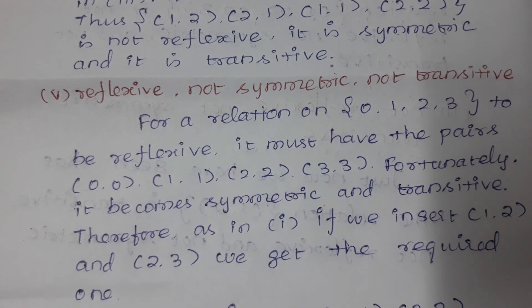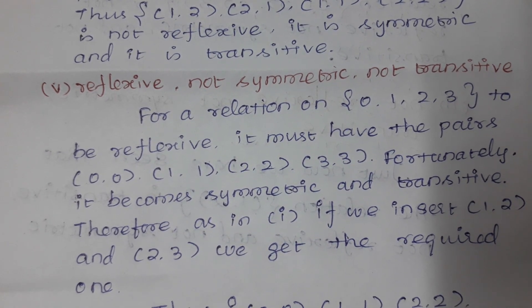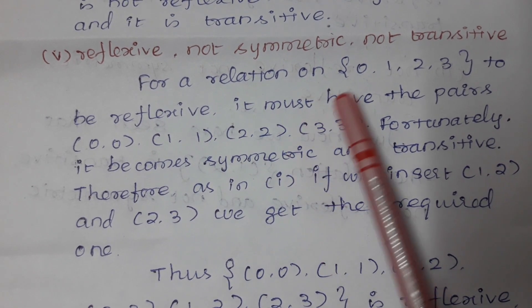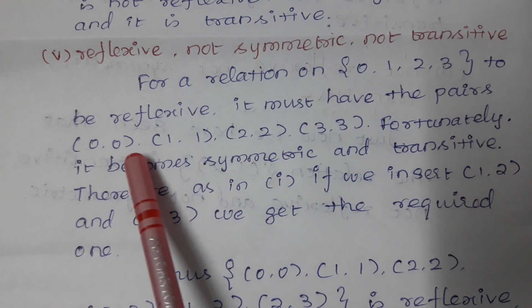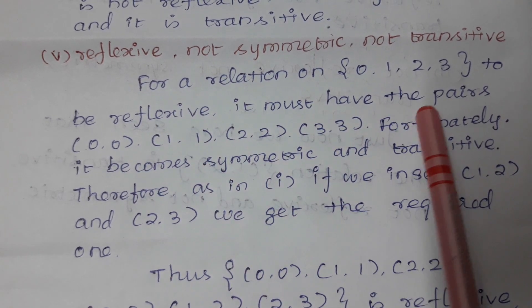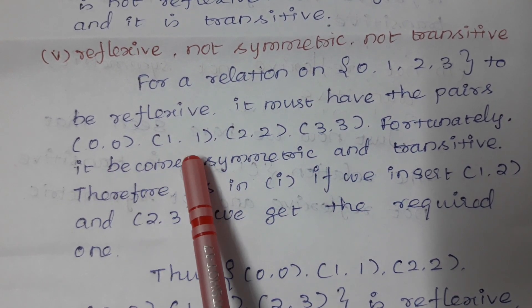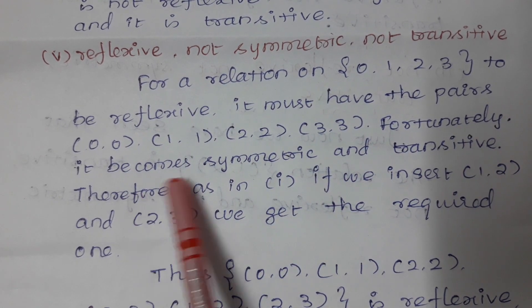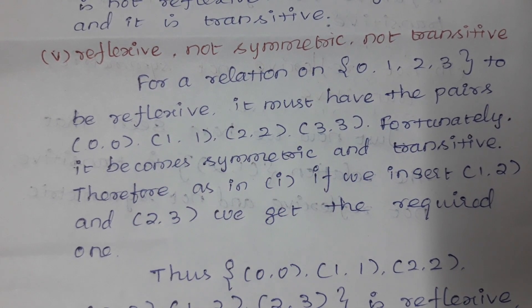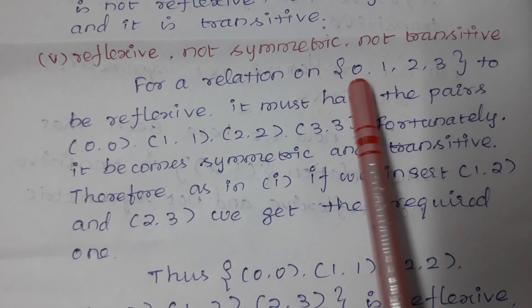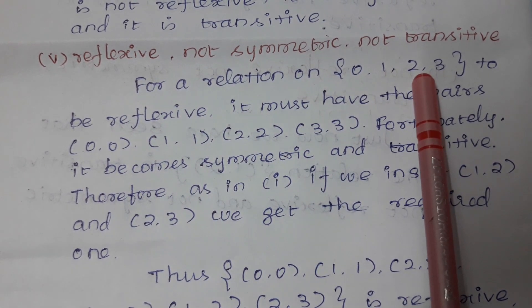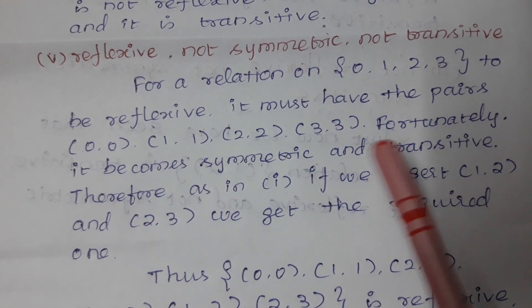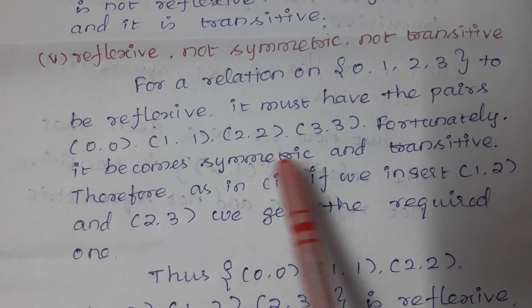Fourth one: reflexive, not symmetric, not transitive. For a relation on {0,1,2,3} to be reflexive it must have the pairs (0,0),(1,1),(2,2),(3,3). It will be all the same as symmetric and transitive if we only include those.